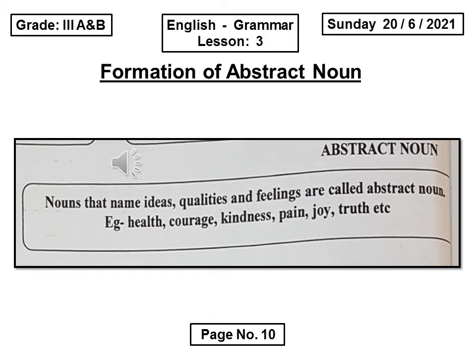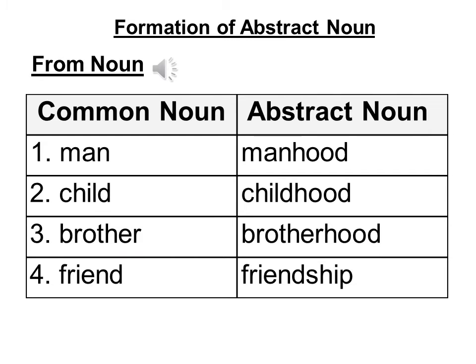Let's start. Look at these examples. Please open your book on page number 10. Look at the first column. Here, we are going to form abstract nouns from common nouns. We have common nouns: man, child, brother, friend, and we are going to change them into abstract nouns.